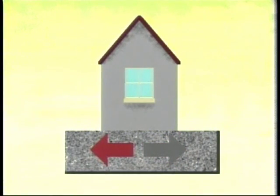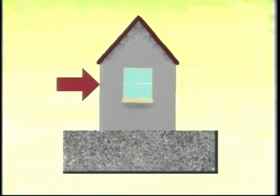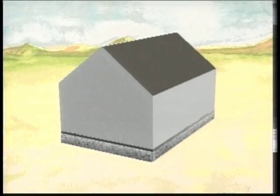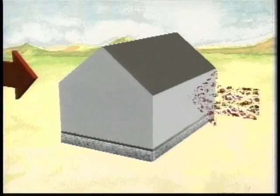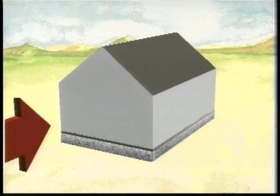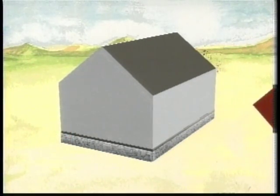But theoretically, we could create that same effect by pushing on the side of the house and holding the ground still. This force is what damages the house. The ground moves one way, and the house moves the other way. If the house isn't strong enough, you've got problems.